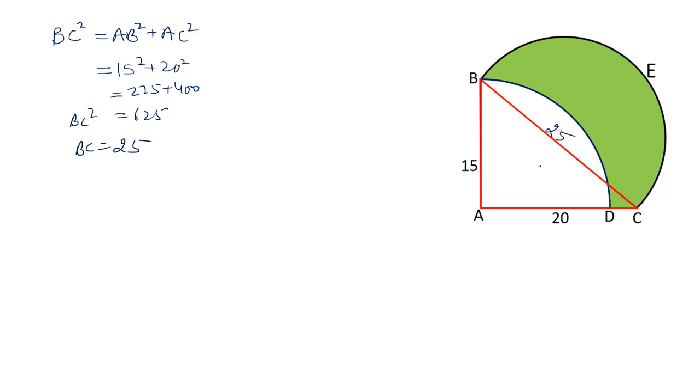Now, ABD is a quadrant and BCE is a semicircle. ABC is triangle. Let's find out how we can move forward. Divide the whole region, name them. Let's say this part is A, this part is B, C and this smaller part is D. Then we have to calculate the value of C plus D.